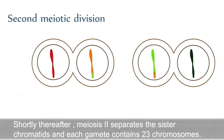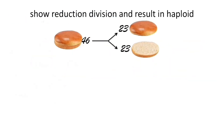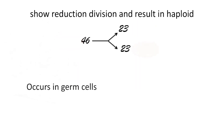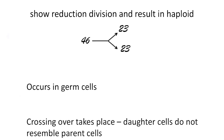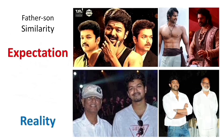Shortly thereafter, the second meiotic division separates the sister chromatids, and each gamete contains 23 chromosomes. Here are a few key points to remember about meiosis: meiosis involves reduction division and results in haploid cells; meiosis exclusively occurs in germ cells; and crossing over takes place, which is why daughter cells do not resemble the parent cell — and hence why children might not exactly resemble their parents.